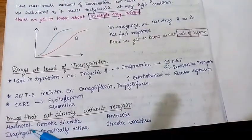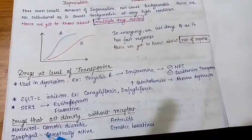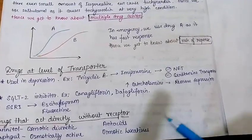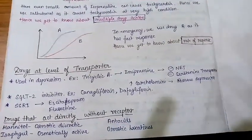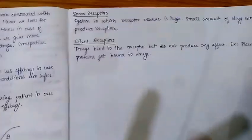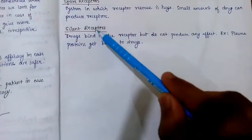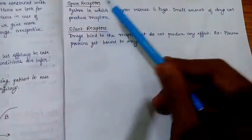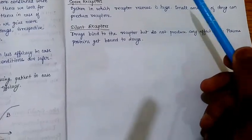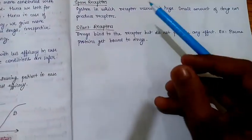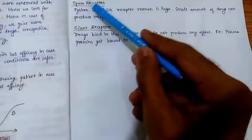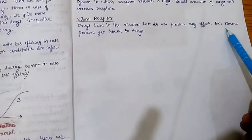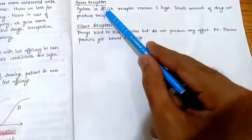Drugs that act directly without receptors: mannitol, which is an osmotic diuretic, and lactulose, which is an osmotically active compound used in constipation. Antacids act by physical or chemical methods. Now two more definitions: spare receptors and silent receptors. In a spare receptor system, a small amount of drug can produce maximum effect because there is a large receptor reserve — by occupying only certain receptors it can produce its full effect.